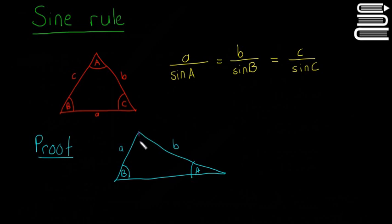I'm going to drop a perpendicular down. So that's going to be a perpendicular line. It's going to have height h.